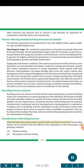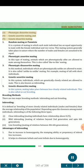Classification of breeding systems. Under the selected breeding system, selected males and females are mated. The breeding system can be classified into five different ways depending on their phenotypic and genotypic relations: 1. Random mating, 2. Phenotypic assortive mating, 3. Phenotypic disassortive mating, 4. Genetic assortive mating, and 5. Genetic disassortive mating. Random mating or panmixia is a system of mating in which each male individual has an equal opportunity to mate with the female individual and vice versa. This mating system generally takes place in nature where the number of males and females are assumed to be equal.